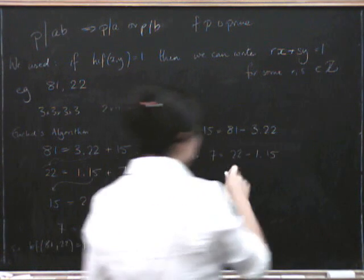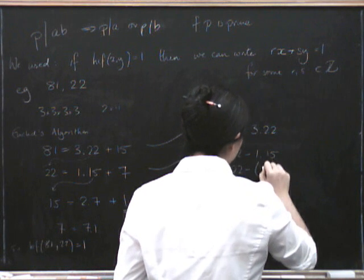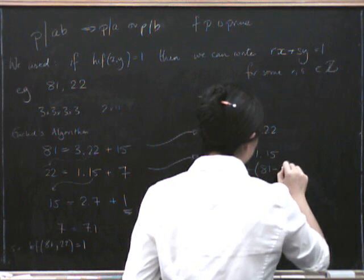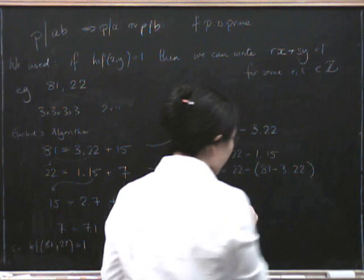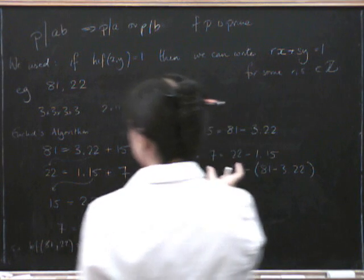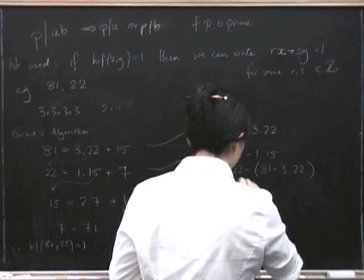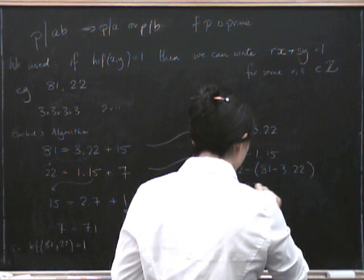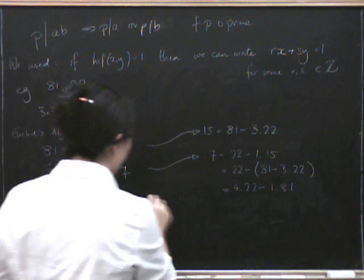So now let's put in our expression for 15 back in there. So that's 22 minus (81 minus 3 times 22). So let's gather all our 22s together. Here we've got 3 of them. And here we've got 1 of them. So we add those together and we get 4 of them. So that's 4 times 22 minus 1 times 81. Okay? So let's keep going.